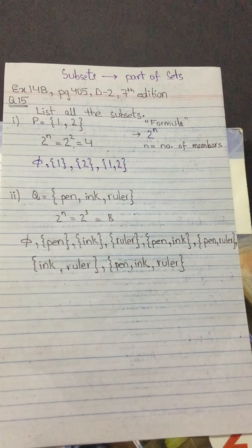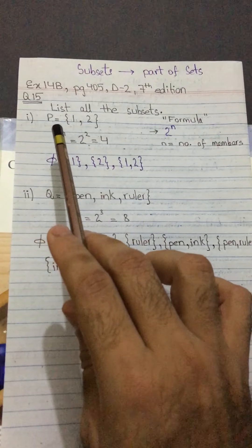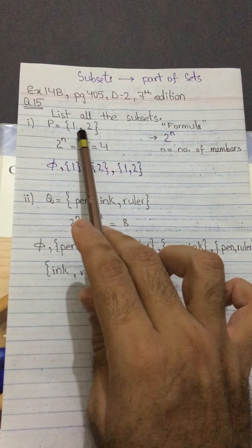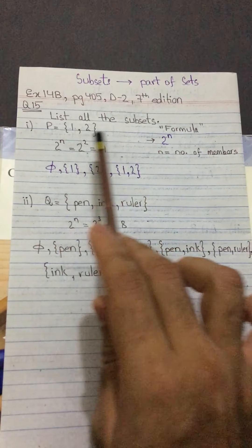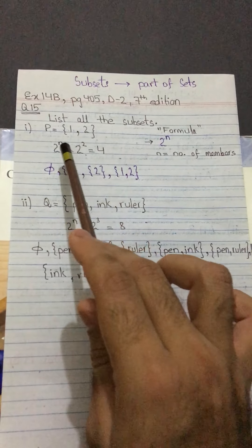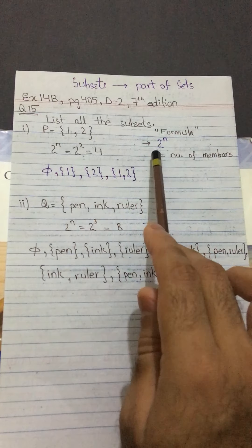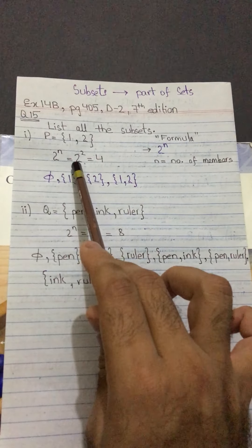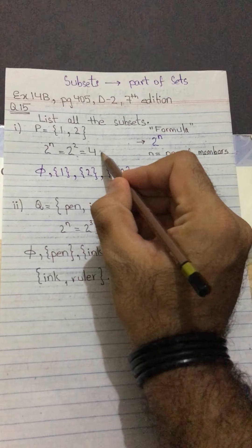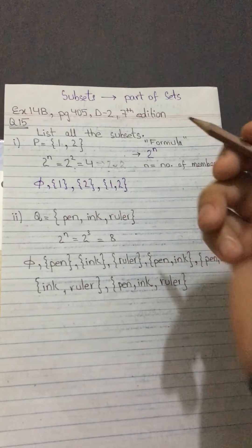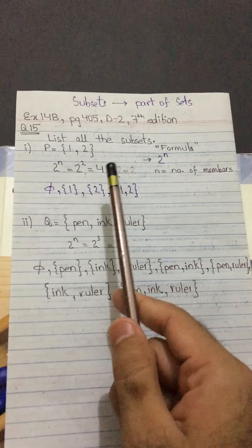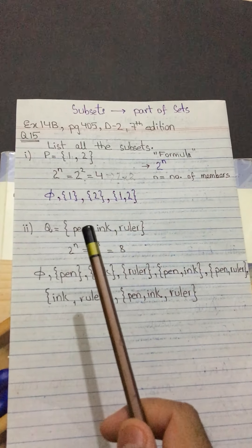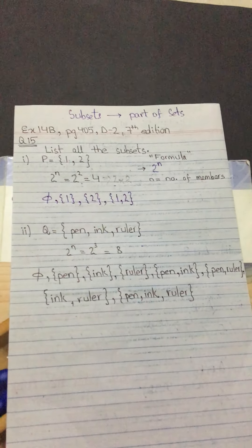For the first part, we have the set {1, 2}, which means we have two members, since the members are separated by a comma. So I will use the formula 2^n with n equal to 2. That gives 2 to the power 2, which equals 4 — meaning 2 multiplied by 2 equals 4. So there will be 4 subsets of this set.